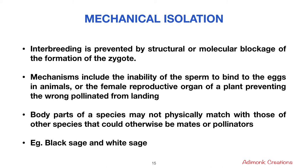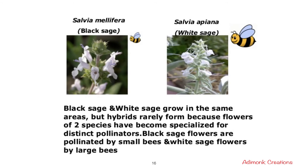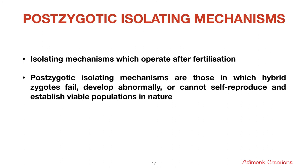The fourth pre-zygotic mechanism is mechanical isolation, where interbreeding is prevented by structural or molecular blockage. This includes the inability of sperm to bind to eggs in animals, or the female reproductive organ of a plant preventing the wrong pollen from landing. Body parts of species may not physically match with those of other species that could otherwise be pollinators. An example is black sage and white sage: they grow in the same areas, but black sage flowers are pollinated by small bees whereas white sage flowers are pollinated by large bees, so hybrids are rarely formed.